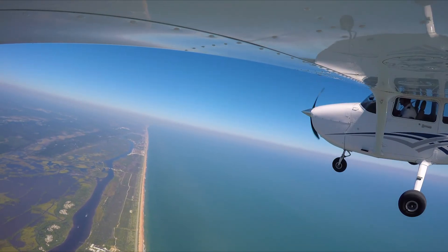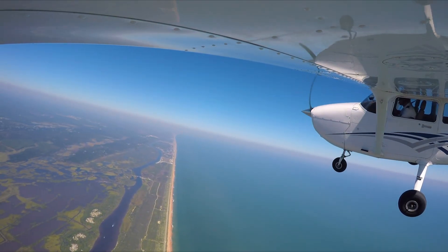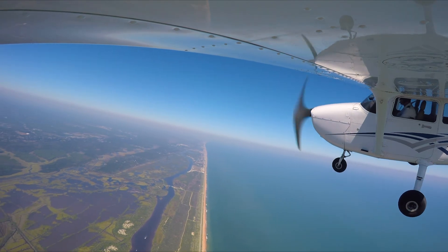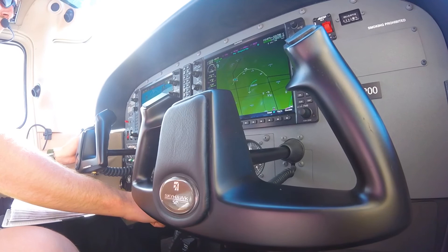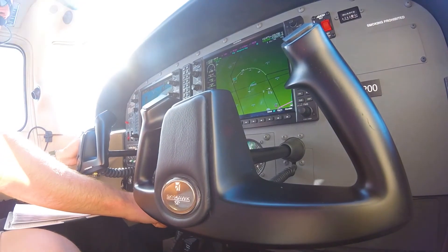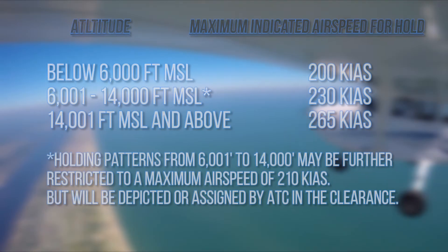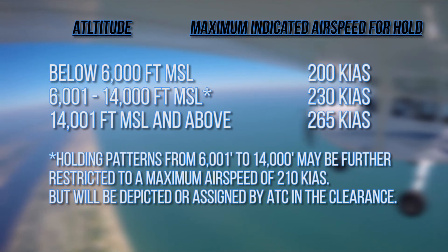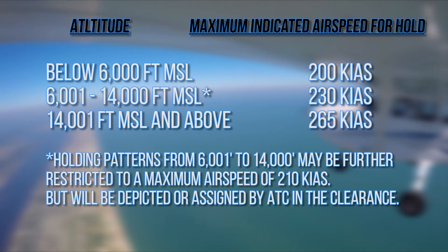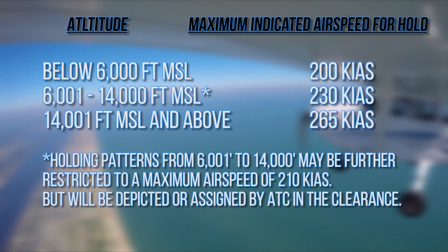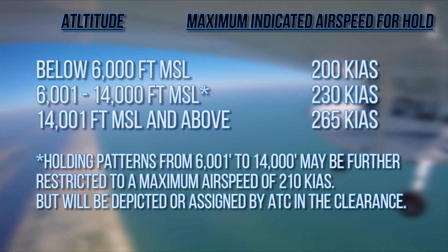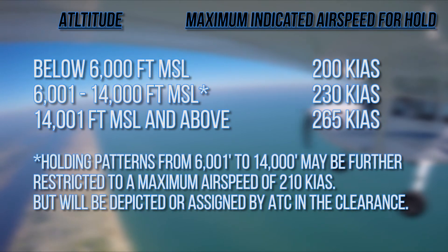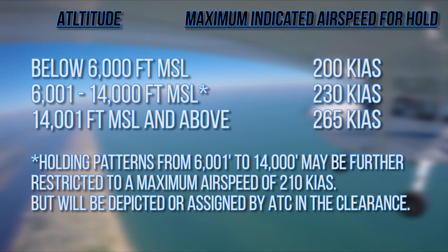Pilots are expected to not exceed specific speeds while holding, depending on the altitude assigned by air traffic control. In the hold clearance, the pilot must slow the plane below the maximum allowed speed at least three minutes prior to reaching the holding fix. Holding patterns from 6,001 feet to 14,000 feet may be further restricted to a maximum airspeed of 210 knots, as depicted or assigned by air traffic control in the clearance.